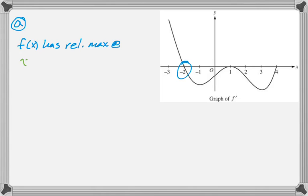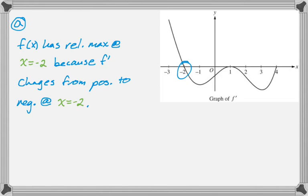So I'm just going to write out my answer. f of x has a relative maximum at x equals negative 2. And my reason is that f' changes from positive to negative at x equals negative 2. That's part A, so free points.